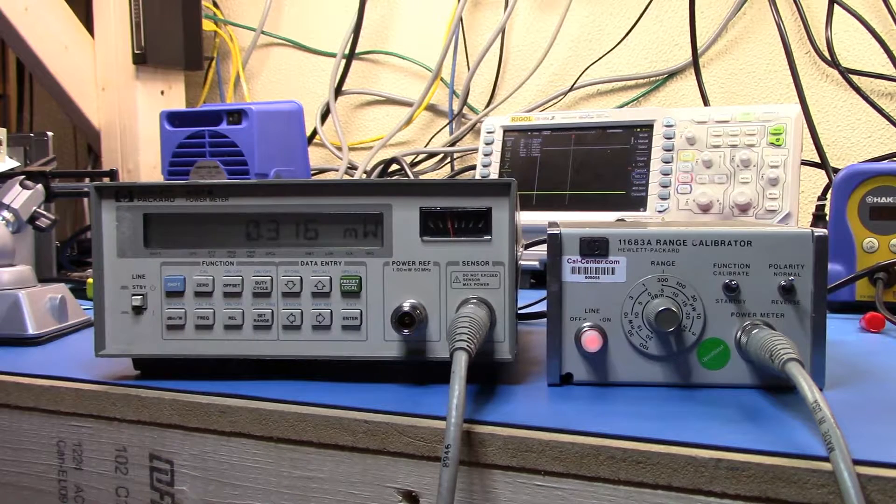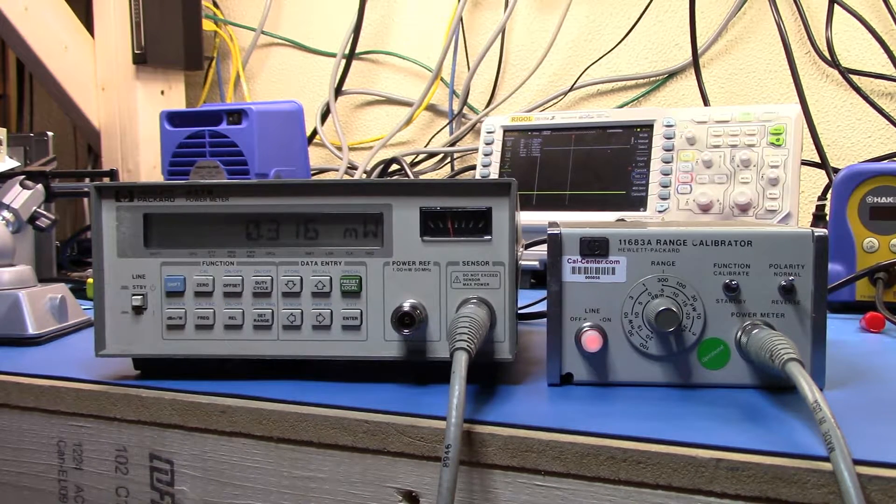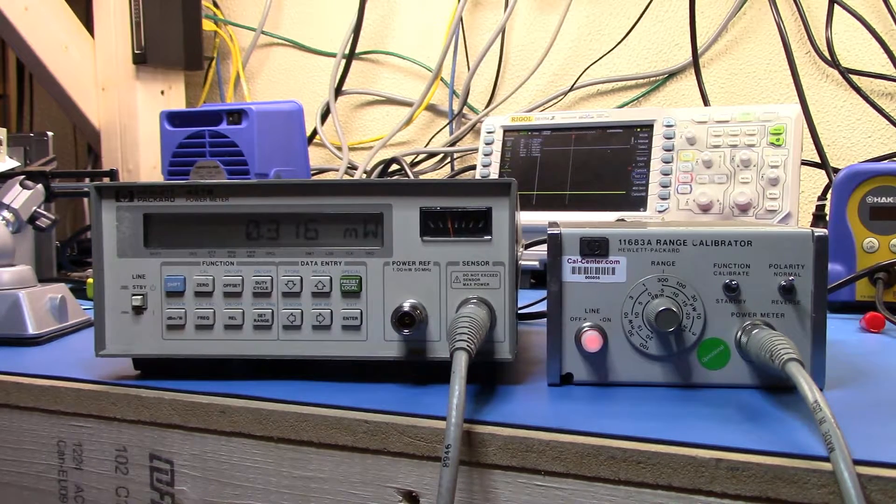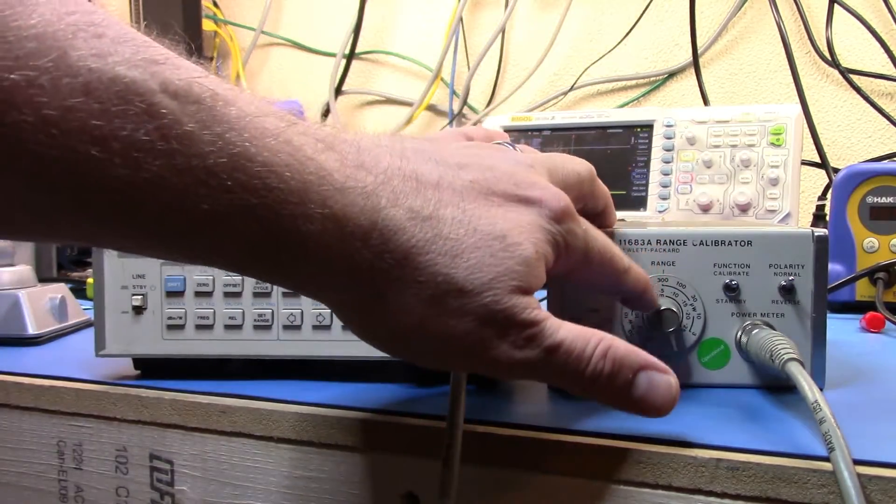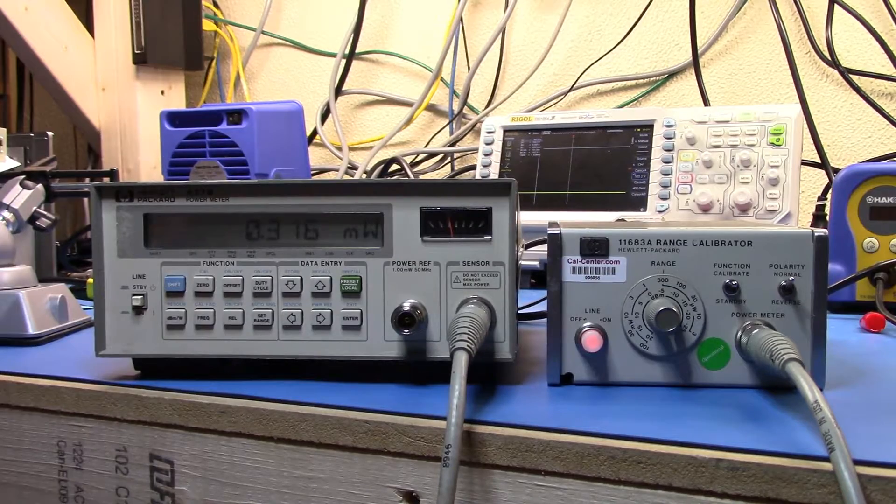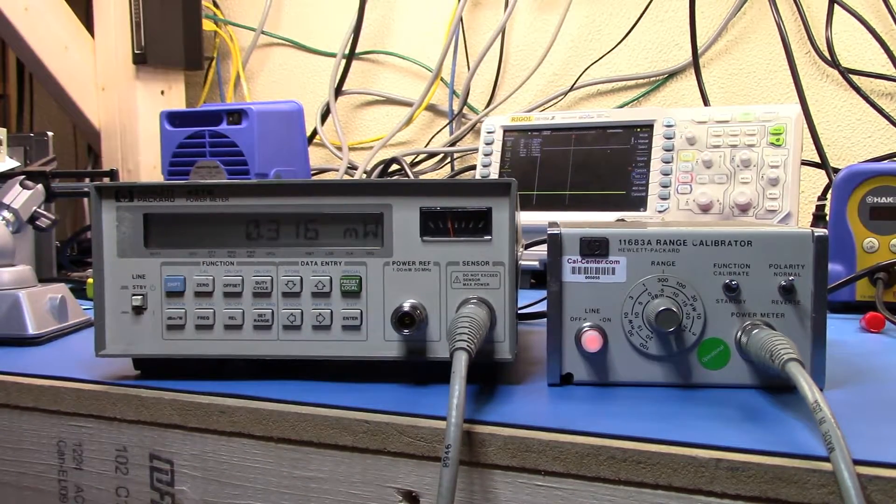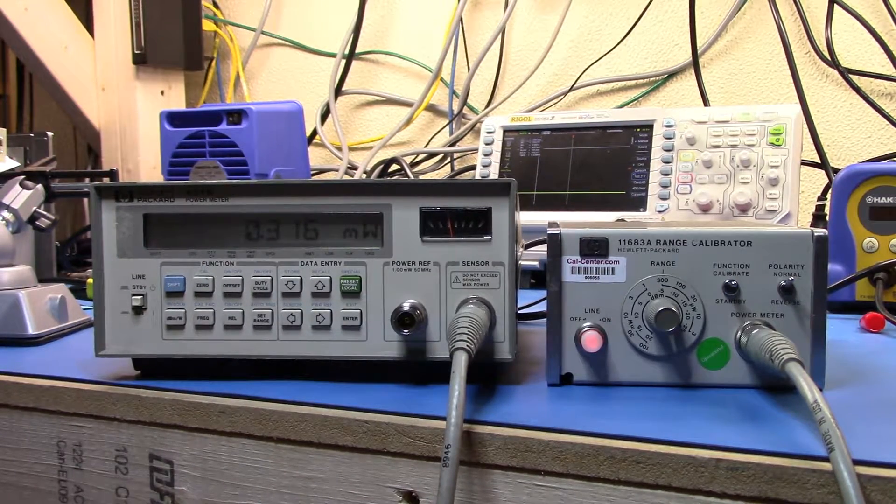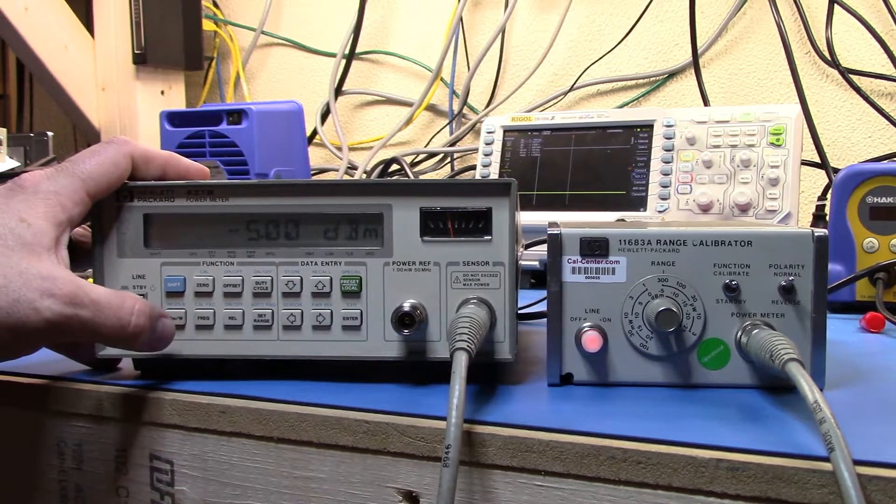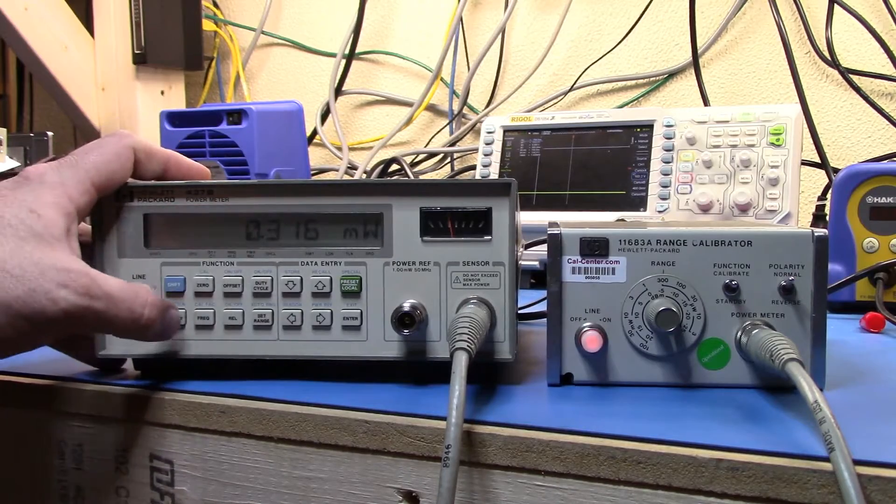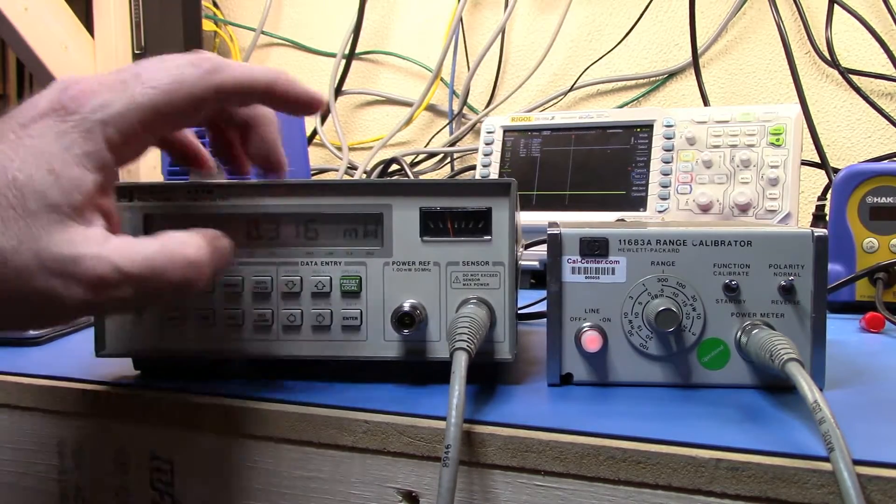Now you're probably wondering why, if I'm reading 300, am I reading 316? And that's really because the legends on here are an approximation. The real values are actually going to be the 3.16, 31.6 and so on. Because if you have a look at the actual dBm value, that's how it's going to match.